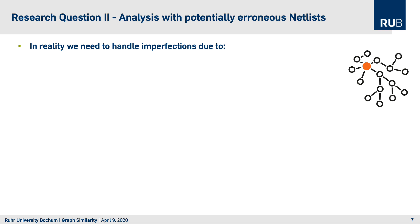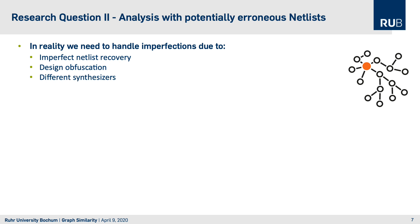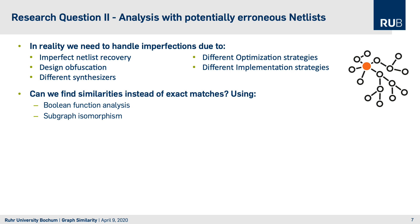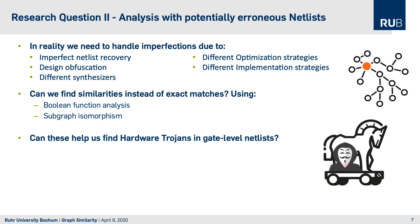Our second research question handles potentially erroneous netlists. While we actually want perfect netlists, in reality we usually don't get them. There may be imperfections in the netlist recovery and imaging, design obfuscation, different synthesizers used, or different optimization strategies such as implementation for area or for speed. The question is: can we still find similarities instead of exact matches using boolean function analysis or subgraph isomorphism? And can these techniques help us find hardware trojans in gate-level netlists?